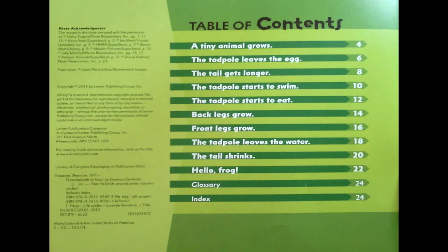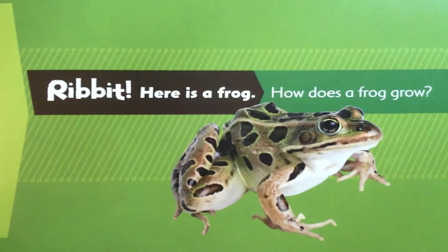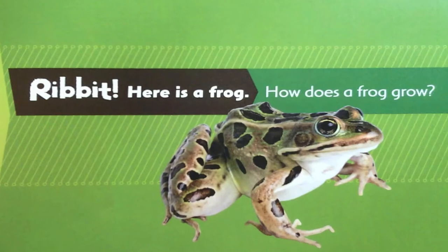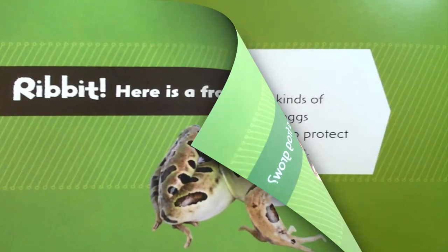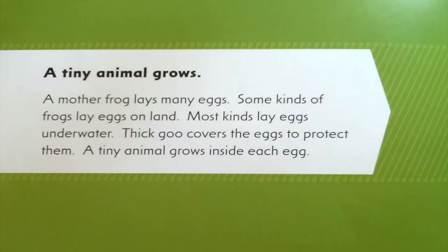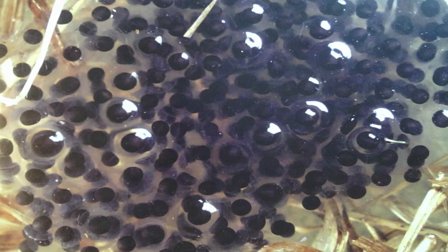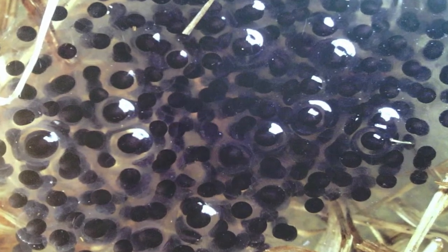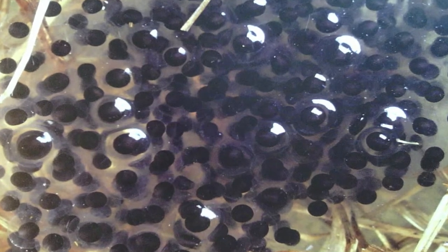Are you ready to read? Ribbit — here is a frog. How does a frog grow? We have a heading. The heading says: a tiny animal grows. Let's read the details to find out more. A mother frog lays many eggs. Some kinds of frogs lay eggs on land. Most kinds lay eggs under water. Thick goo covers the eggs to protect them. A tiny animal grows inside each egg.